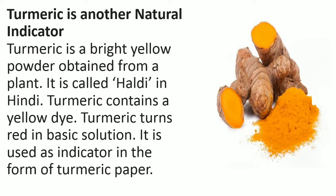Another natural indicator is easily available at your home — it is turmeric. Turmeric is a bright yellow powder obtained from a plant. It is called Haldi in Hindi. Turmeric contains a yellow dye and turns red in a basic solution. It is used as an indicator in the form of turmeric paper, just as litmus paper is made from litmus dye. Turmeric paper, which is available in the market, is yellow in colour, but you can also make it at home by making a turmeric powder solution with water, dipping paper in it, and drying it so the dye sticks to the paper.